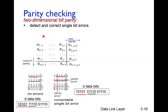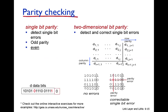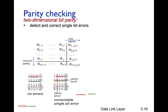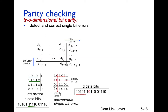The disadvantage of two-dimensional bit parity compared to single-bit parity — where only one extra bit was sent — is overhead. In two-dimensional parity, nine extra bits are sent. However, the advantage is that it can identify exactly which bit has an error and correct it. This capability is called forward error recovery.